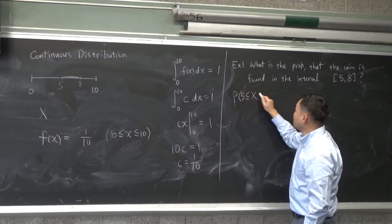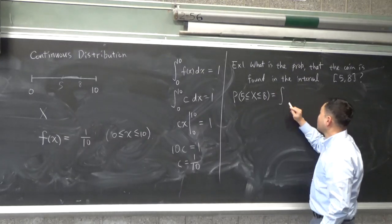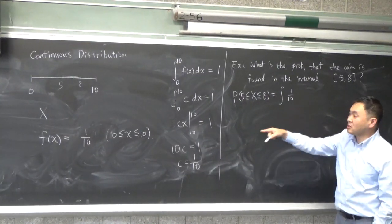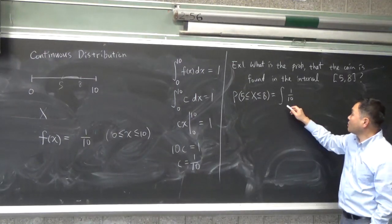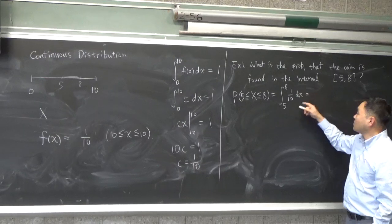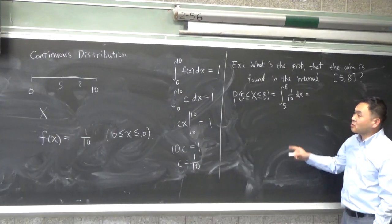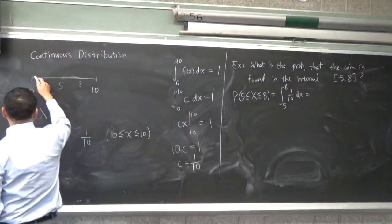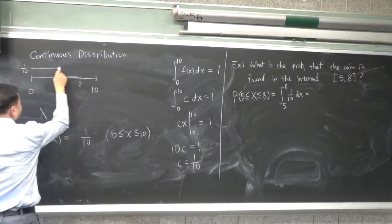So you integrate this 1 over 10. PDF is being integrated from 5 to 8. And this is just a simple integration. You can even do this graphically because the graph of the function is like here's 1 over 10. It's a constant function.